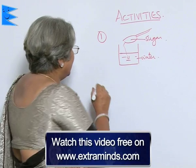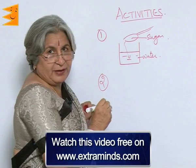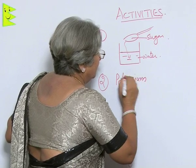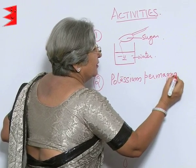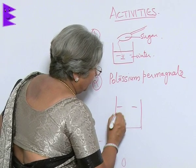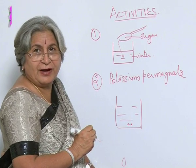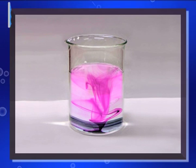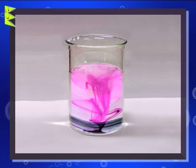The second observation: take the crystals of potassium permanganate. If you add a few crystals of potassium permanganate into a beaker of water, you will find colored streaks starting to come out of the grains. In the beginning, you will be able to clearly see the streaks.